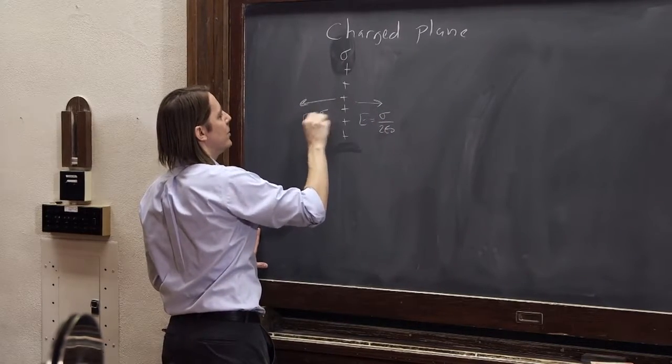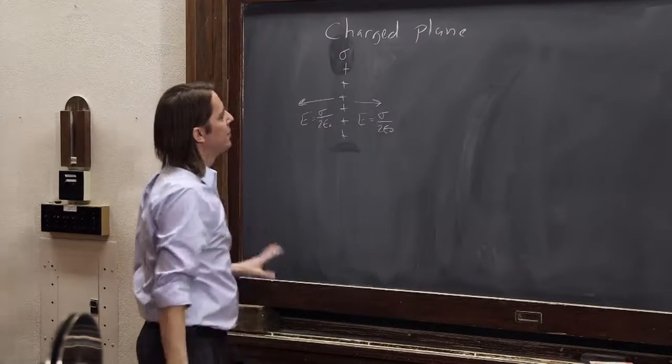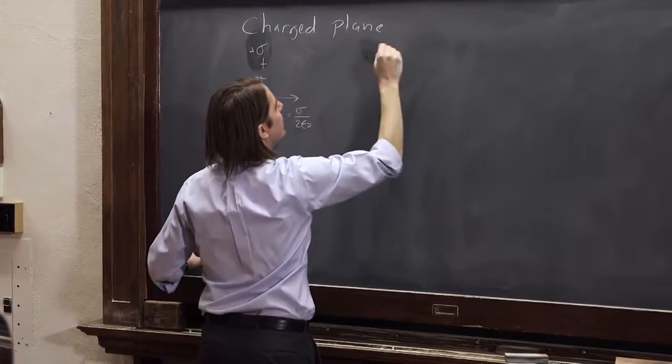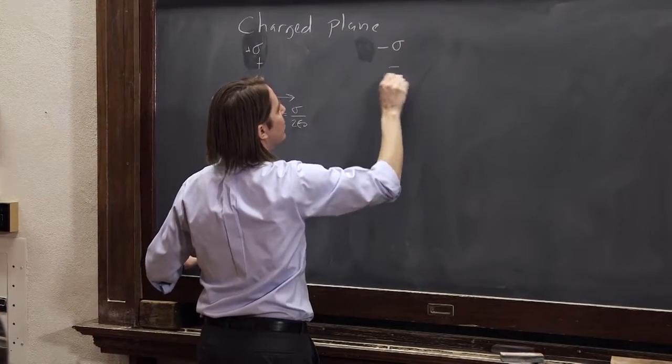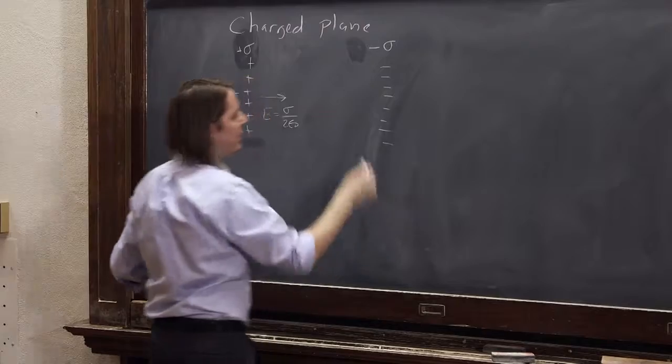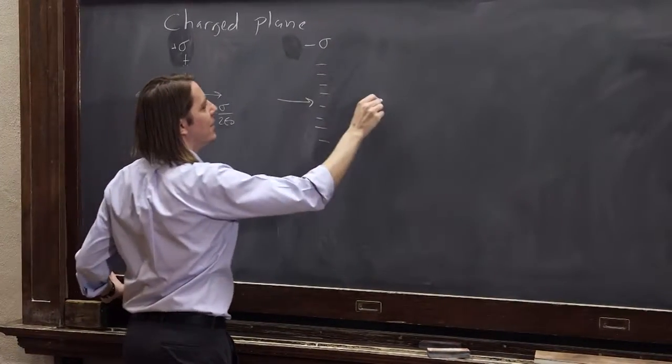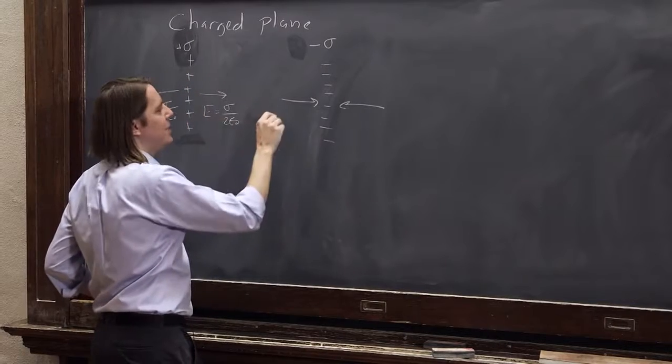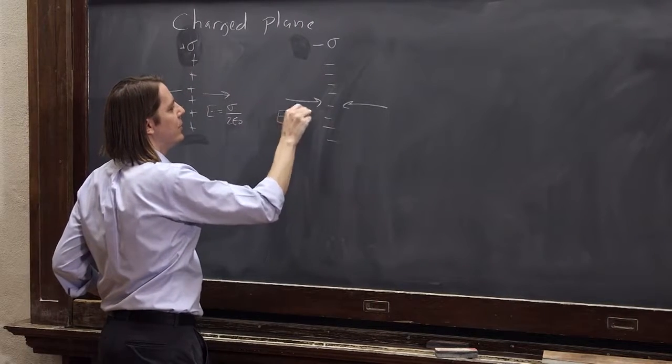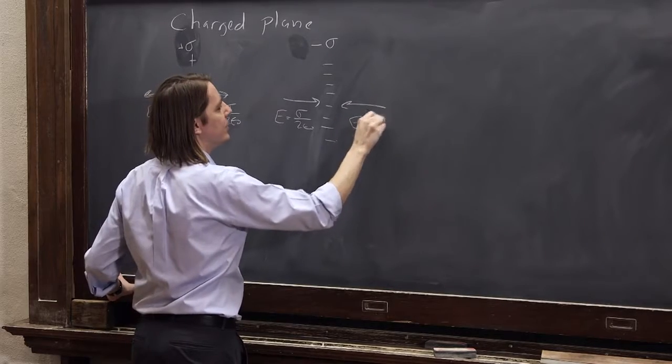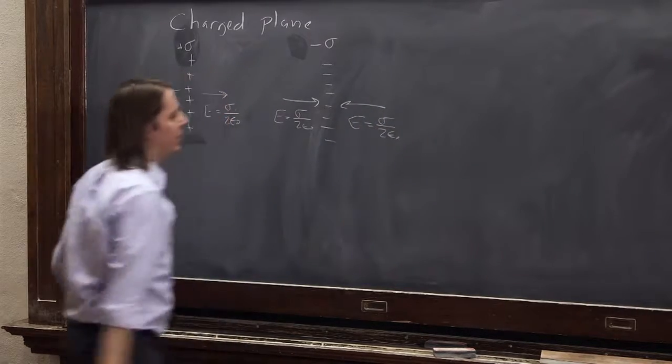And we know that if we have a negative charge plane over here, negative sigma, a bunch of negative charges sitting on a plane, and you're just seeing the edge of the plane, it's going to create an electric field pointing in like that, with the same magnitude, E equals sigma over two epsilon naught.